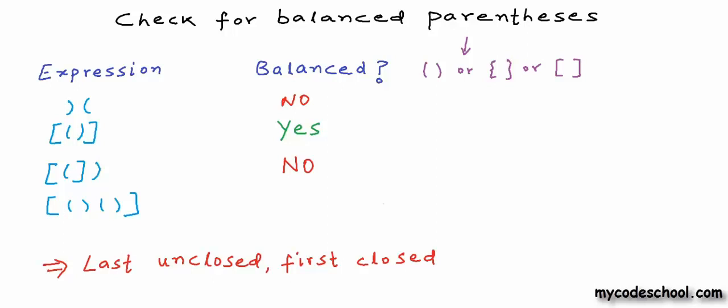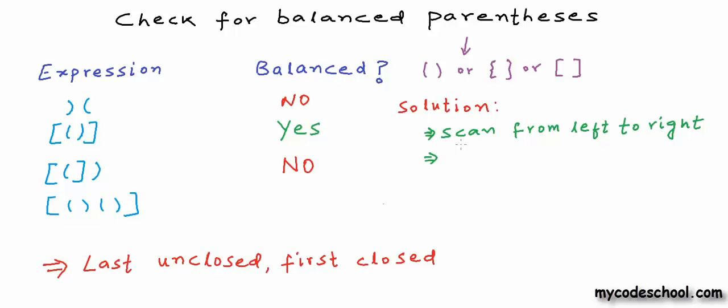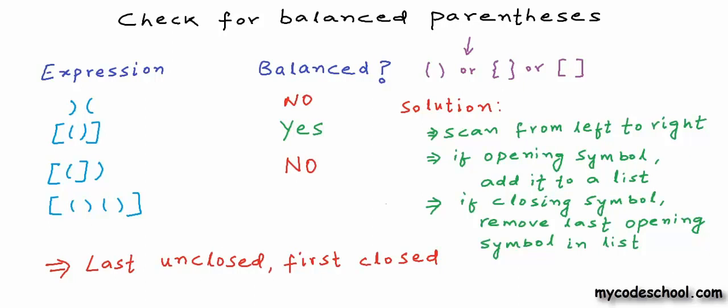We can use this approach to solve the problem. Scan the expression from left to right and keep track of all unclosed parenthesis. Whenever we get an opening symbol, add it to a list. If we get a closing symbol, it should be the closer for the last element in the list. In case of inconsistency — if the last opening symbol is not of the same type, or the list is empty — we stop and say parenthesis are not balanced. Otherwise, remove the last opening symbol and continue.